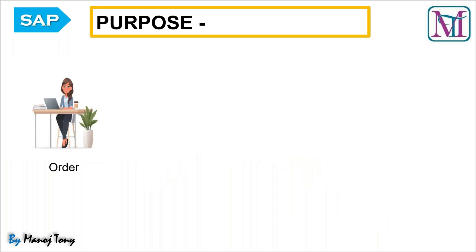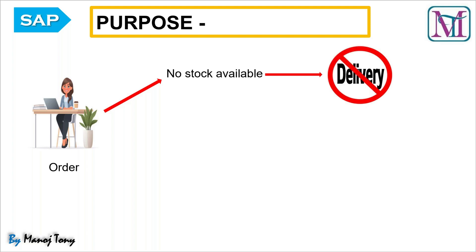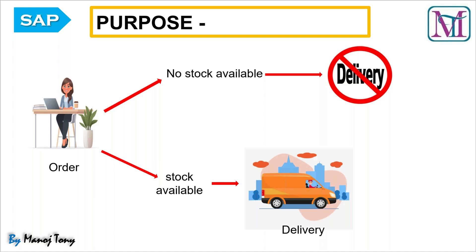If stock is not there in the SAP system, then we cannot create the delivery. First, a user will create a sales order in SAP. In the background, the system will check the stock of the material. If stock is not available in our SAP plant code, the system will not allow creating the delivery. Some fields in master data can only be tested at the delivery level, so by default we create order, then delivery, then billing. If stock is available, only then will the system allow delivery creation, after which we can deliver goods to the customer and create an invoice.